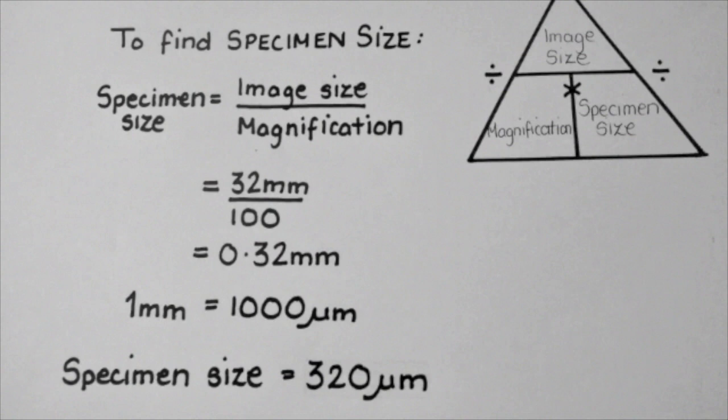So here we found the image size to be 32 millimeters. So if you divide that by the magnification of the drawing, which was 100, and that information is given to you, it gives you a specimen size of 0.32 millimeters.